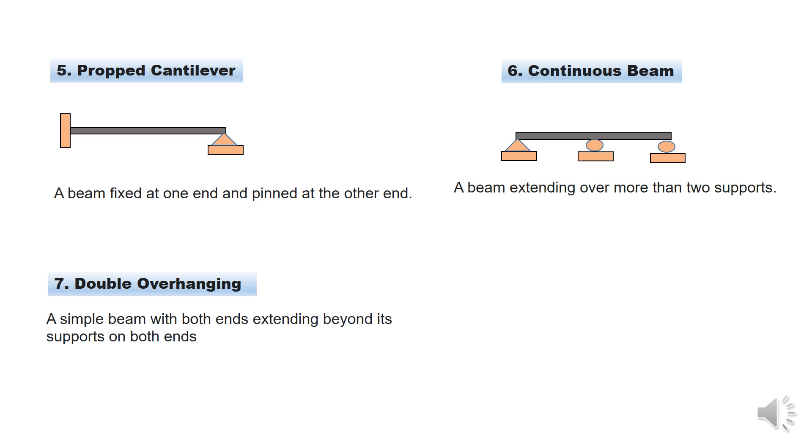The next one is continuous beam. When we have more than one support, as this case in figure 6, when we have more than one support, here we have pin support, roller support, and roller support. So when you have more than one support you call it continuous. It can be more than three, as the case may be.